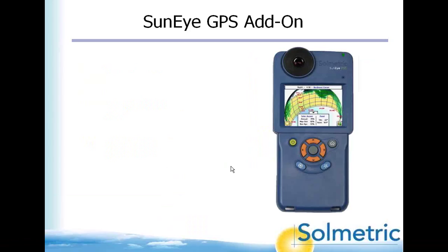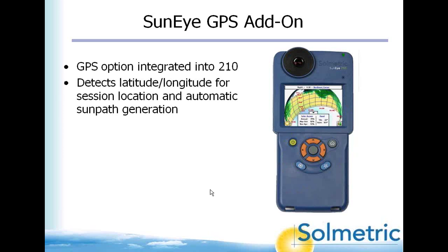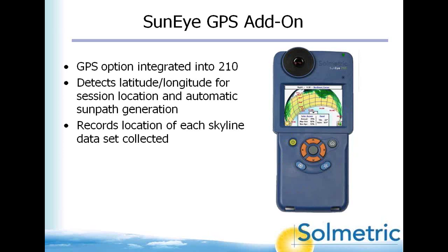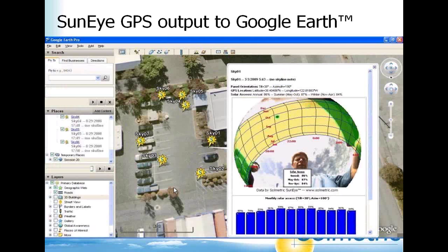The GPS option is built into the SunEye, detecting latitude and longitude for the session and geotagging each skyline as it's collected, then showing those points in a Google Earth file. For example, using the extension kit in a parking lot with GPS on, you could evaluate shade for a solar canopy or parking structure 10 to 12 feet off the ground, then come back to the office, view all readings on a Google Earth map, and have a meaningful conversation with the client about where to place the system based on the tree shading analysis.